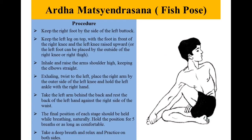Ardha Matsyendrasana, Fish/Twist Pose. Procedure: Keep the right foot by the side of the left buttock. Keep the left leg on top with the foot in front of the right knee and the left knee raised upward. The left foot can also be placed by the outside of the right knee or right thigh. Inhale and raise the arm shoulder-high keeping the elbows straight. Exhaling, twist to the left. Place the right arm by the outer side of the left knee and hold the left ankle with the right hand. Take the left arm behind the back and rest the back of the left hand against the right side of the waist. Hold the position for 5 breaths or as long as comfortable, then take a deep breath, relax, and practice on both sides.